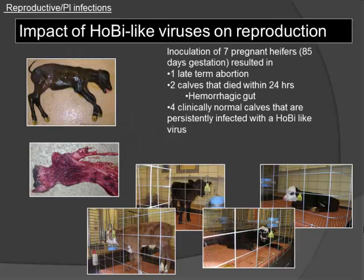The next question: do we have the same reproductive problems as with BVD? We inoculated seven pregnant heifers at 85 days gestation with two different Hobi-like virus isolates — the original from Brazilian fetal bovine serum and the Italian isolate. We had one late-term abortion, two calves that died within 24 hours of birth with hemorrhagic guts, and four clinically normal animals that were persistently infected with Hobi-like virus. We kept these animals for two months. One was smaller than average; the other three looked completely normal.